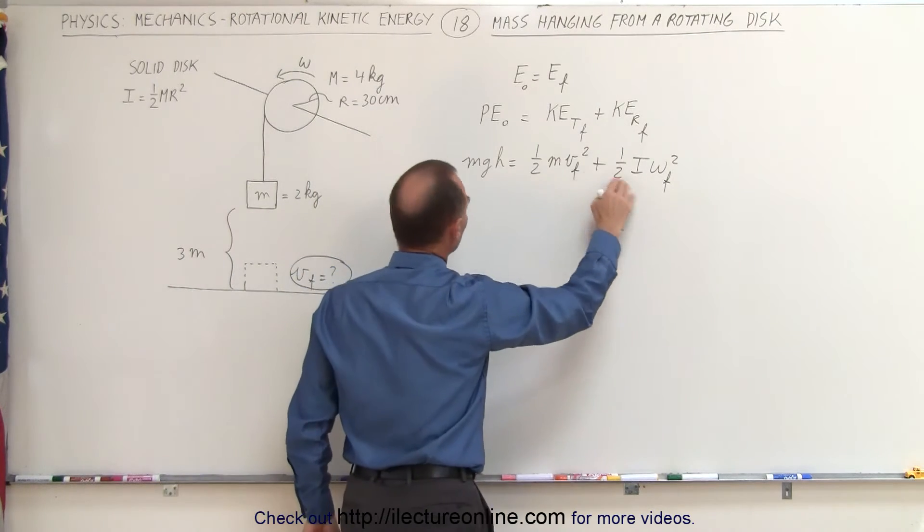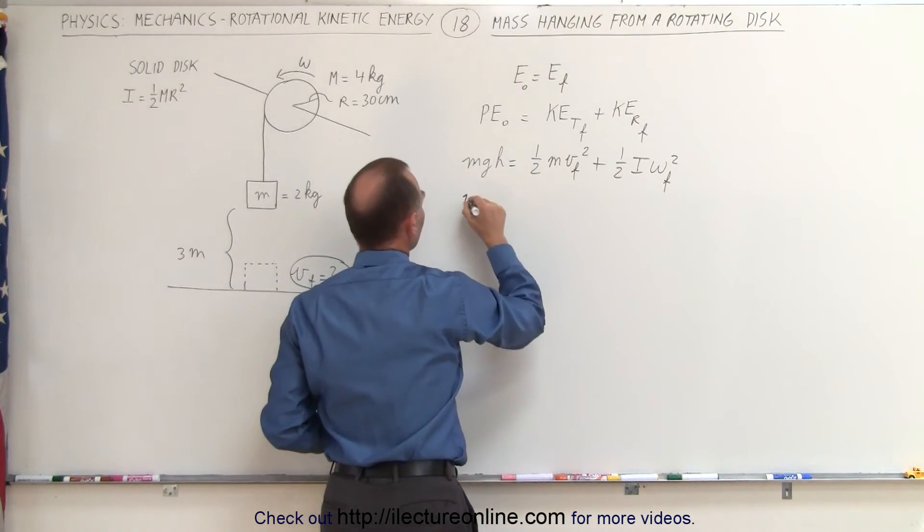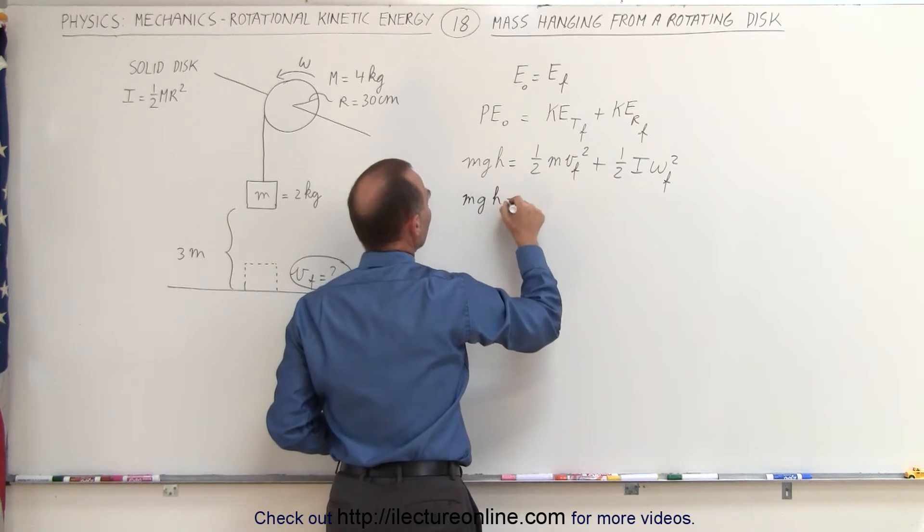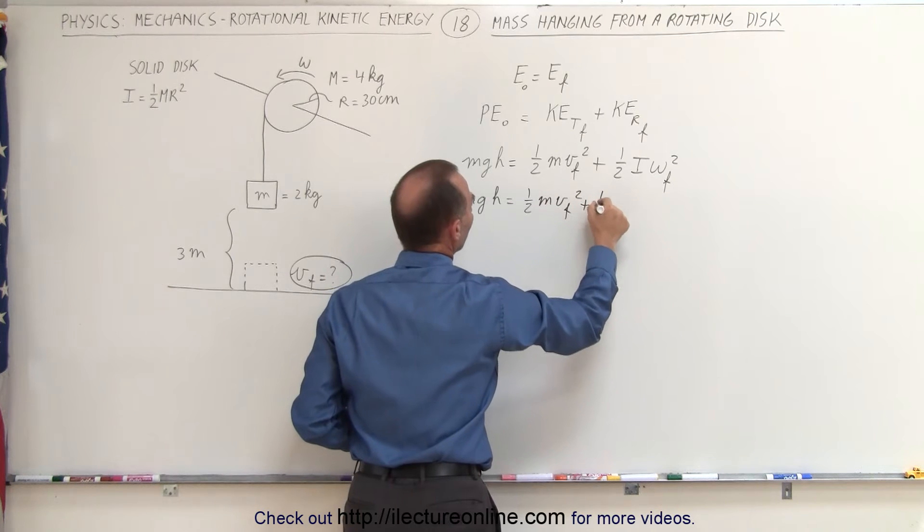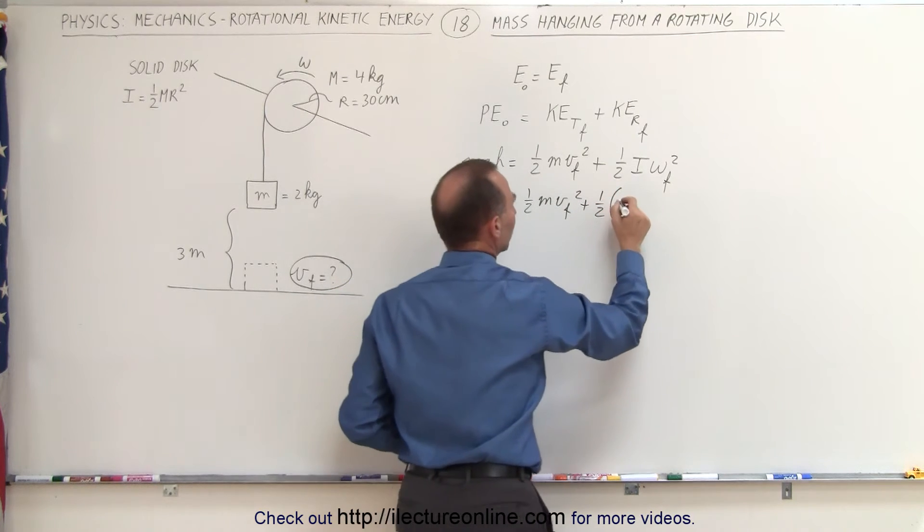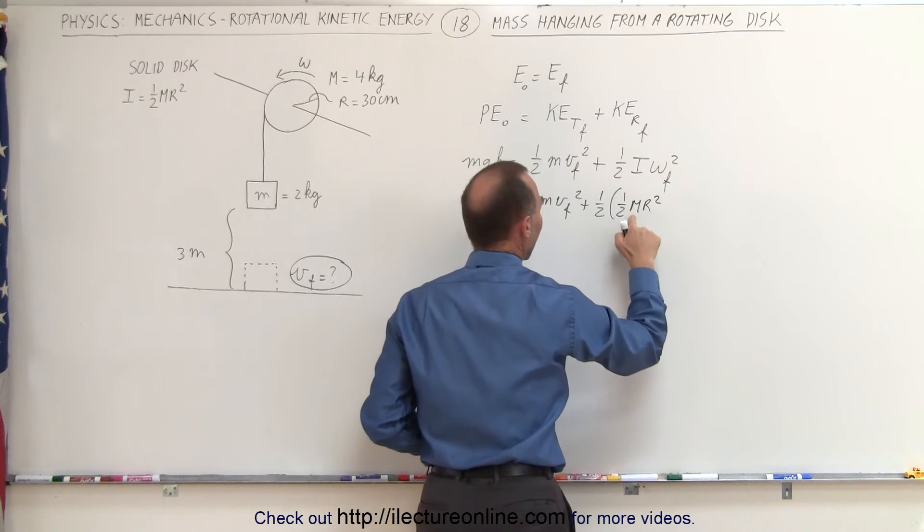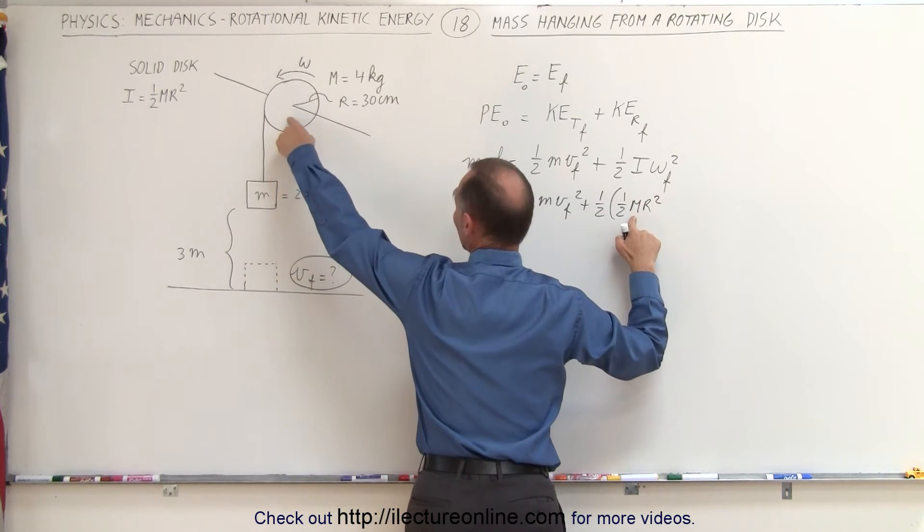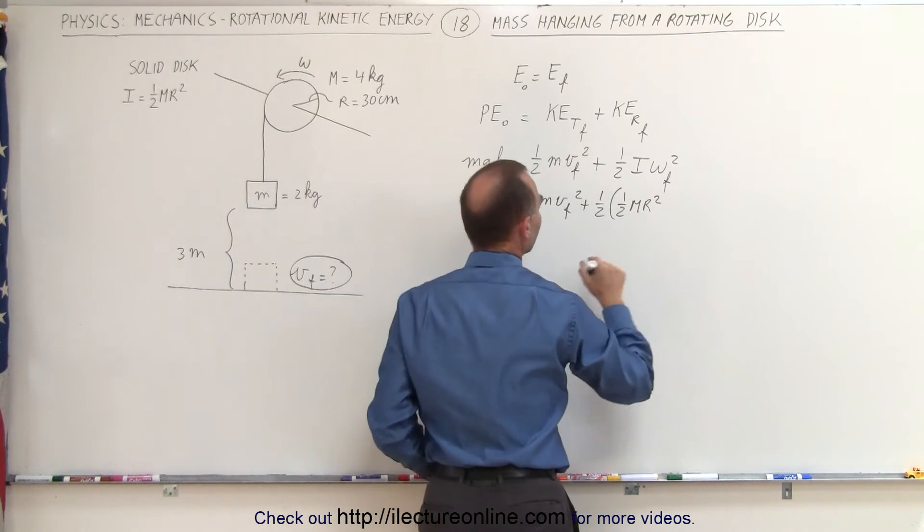Plugging in what these are equal to, because it's a solid disk and we have the moment of inertia, we get mgh is equal to one-half mv final squared, plus one-half times the moment of inertia, which is one-half Mr squared. I use a capital letter M to denote the mass of the disk, a smaller m to denote the mass of the object.